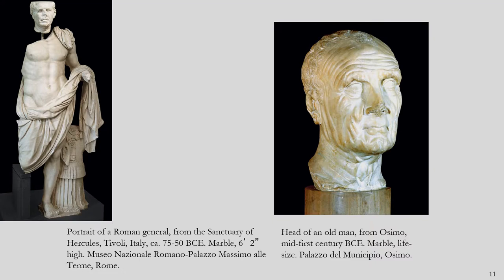Look at this image of a Roman general — we see a middle-aged man's face sitting on a young, athletic Greek-style body. This would not be out of place next to the Doryphoros. The Greek influence on Roman art is significant because so much of the sculpture we have of the ancient Greeks were actually Roman copies. The Romans preferred marble, while the Greeks in many cases preferred bronze. When the Romans copied the Greeks or made original sculptures, they typically used marble.